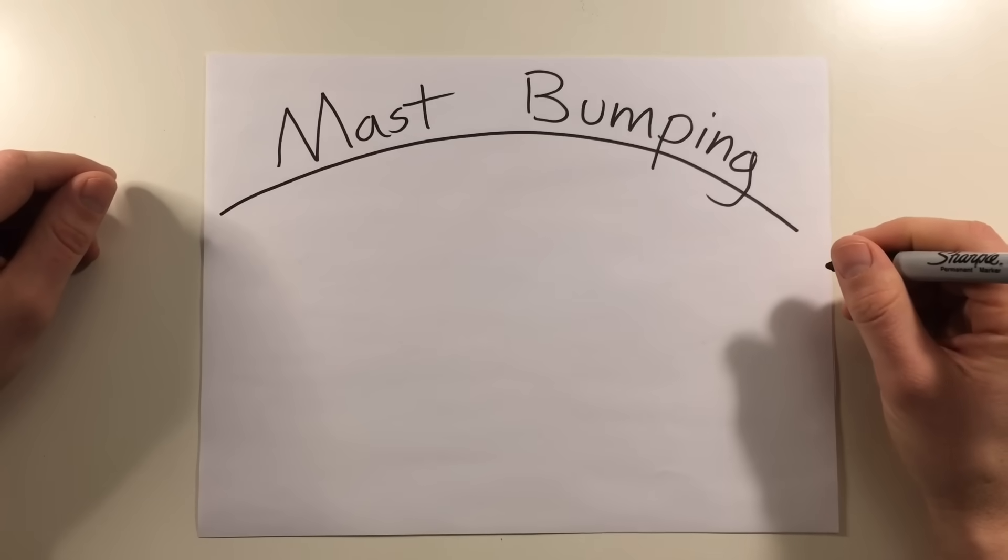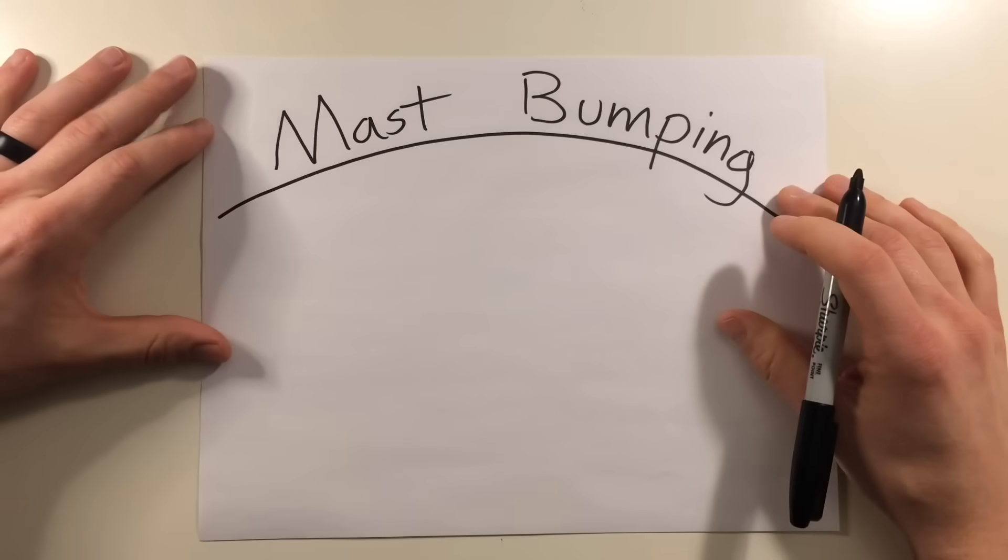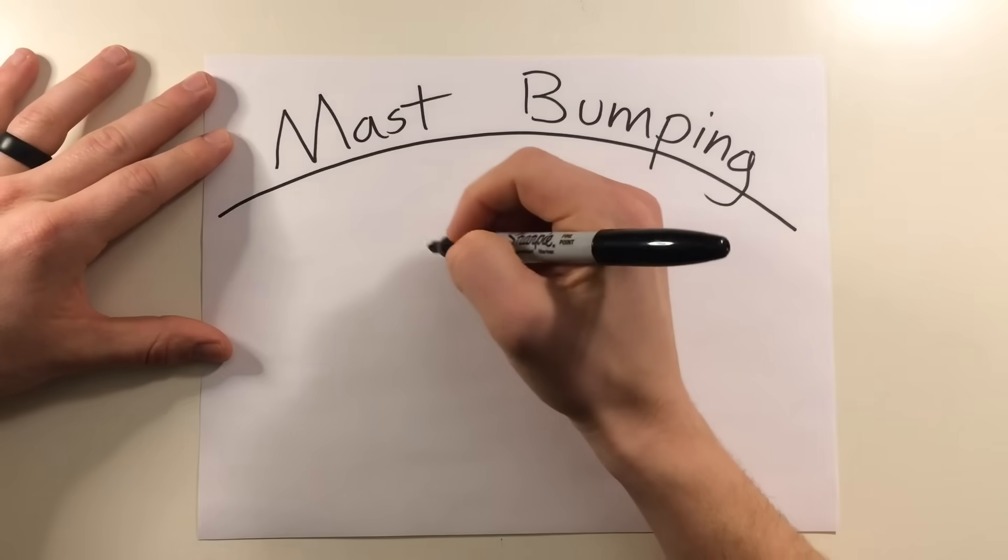But mast bumping, just like the name implies, is when the main rotor hub contacts or bumps the rotor mast. So let's take a look at what that looks like.